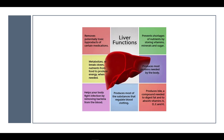A healthy liver is critical for nutrition. The liver is responsible for producing important proteins like those needed for red blood cells, albumin, and blood clotting. It is one of the organs that breaks down old and damaged blood cells. The liver helps metabolize carbohydrate, fat, and protein in order for them to be used for energy.